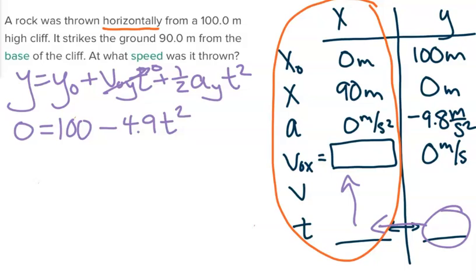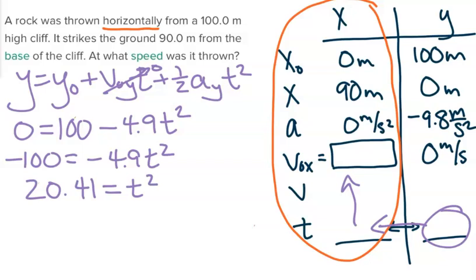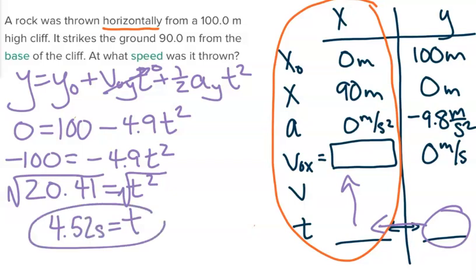So we can move the 100 to the other side: negative 100 equaling negative 4.9 t squared. And then we'll go ahead and divide both sides by negative 4.9, so that will leave us with 20.41 on the left and t squared on the right. So taking the square root of that, we are left with a time of 4.52 seconds.